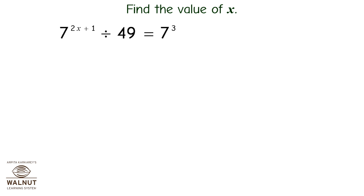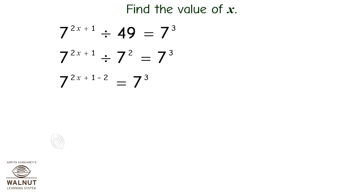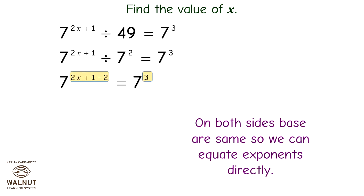Find the value of x: 7 raised to 2x plus 1 divided by 49 is equal to 7 raised to 3. Therefore, 7 raised to 2x plus 1 divided by 7 raised to 2 is equal to 7 raised to 3. Therefore, 7 raised to 2x plus 1 minus 2 is equal to 7 raised to 3. On both sides the base is the same, so we can equate the exponents directly: 2x plus 1 minus 2 is equal to 3.